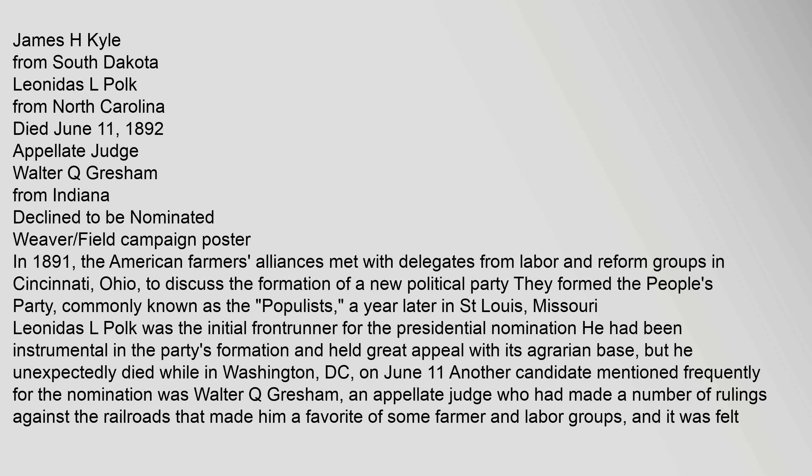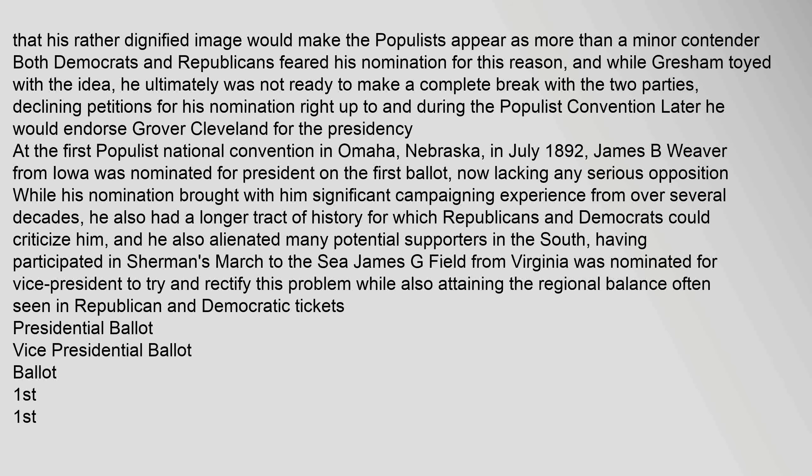A year later in St. Louis, Missouri, Leonidas L. Polk was the initial frontrunner for the presidential nomination. He had been instrumental in the party's formation and held great appeal with its agrarian base, but he unexpectedly died while in Washington, D.C., on June 11. Another candidate frequently mentioned was Walter Q. Gresham, an appellate judge who had made rulings against the railroads, making him a favorite of some farmer and labor groups. Gresham ultimately was not ready to make a complete break with the two parties, declining petitions for his nomination, and later endorsed Grover Cleveland.